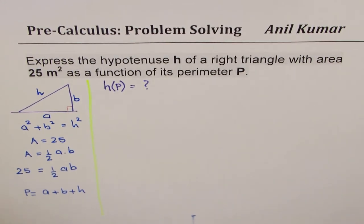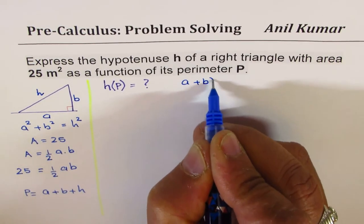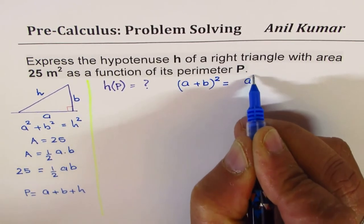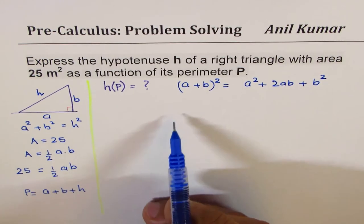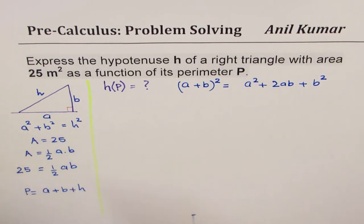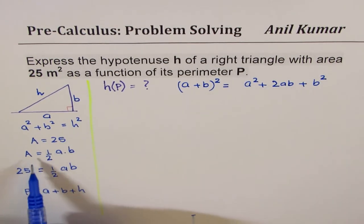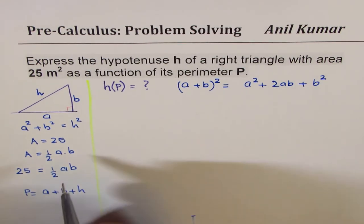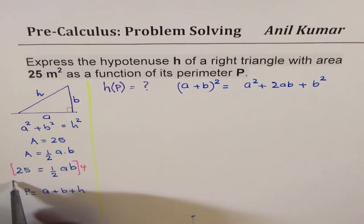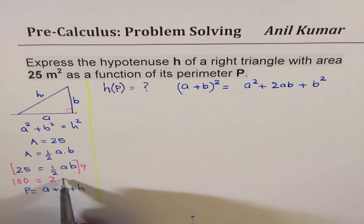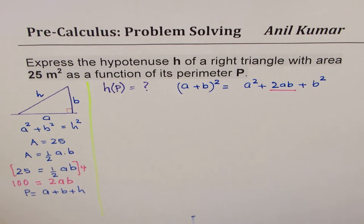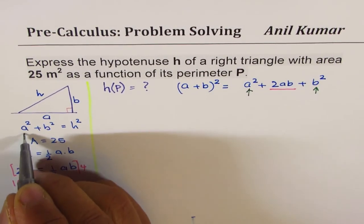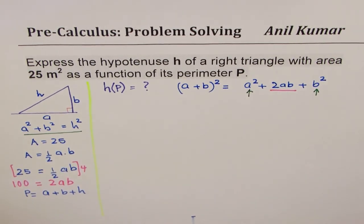Now to begin with, we know that a plus b whole square is equal to a square plus 2ab plus b square. Now in our expression, we can say that a square plus b square is h square. 2ab we could get from this area expression. So what we are going to do is we will just multiply this equation by 4. So if we do that, we get 100 equals to 2ab. So we can substitute 2ab as 100. We can actually substitute a square plus b square as h square. So let's do that first.